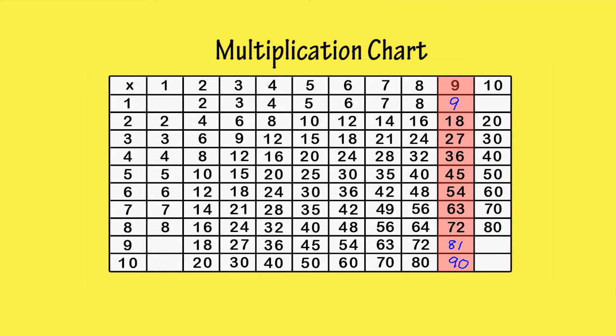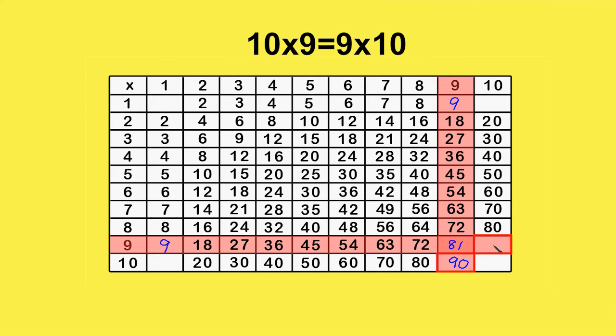We can also complete the 9th row. 1 times 9 is 9. The next 8 boxes are already filled in, which only leaves one blank box. We know that 10 times 9 equals 9 times 10, which is 90, so we can just transfer the answer over.